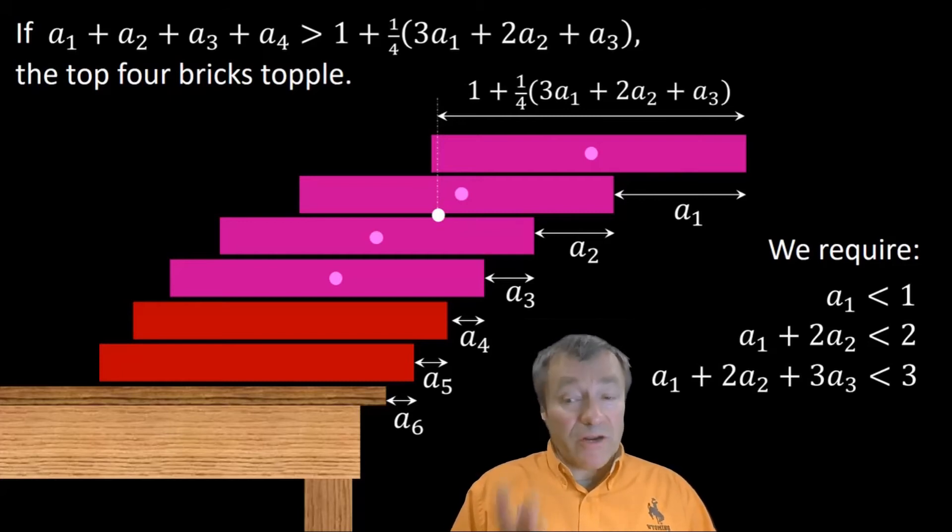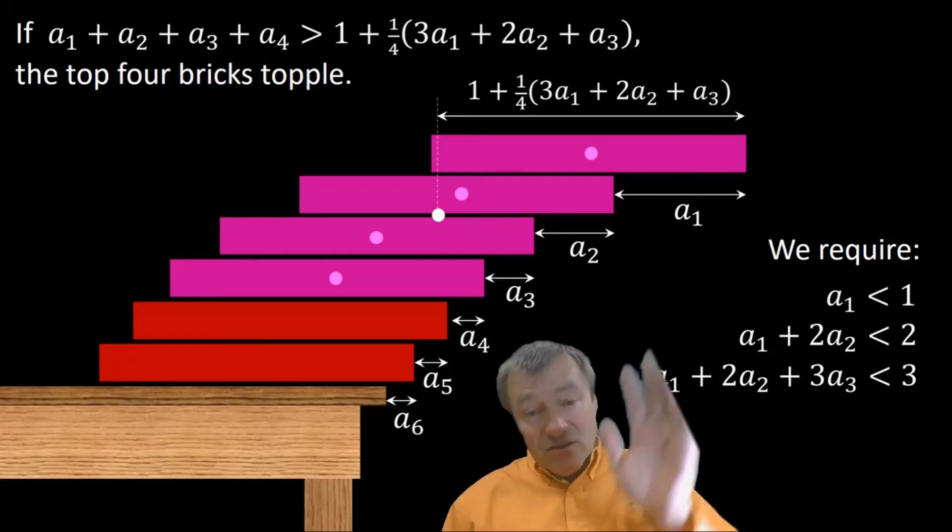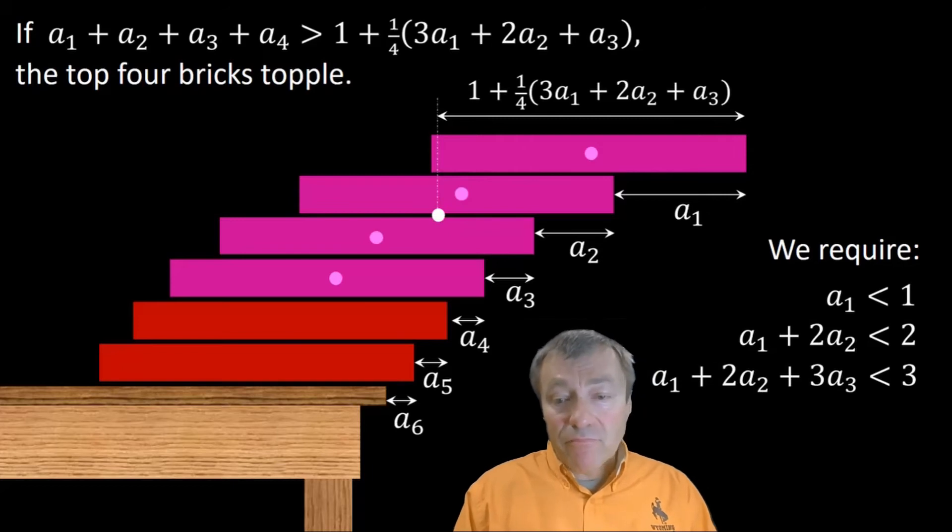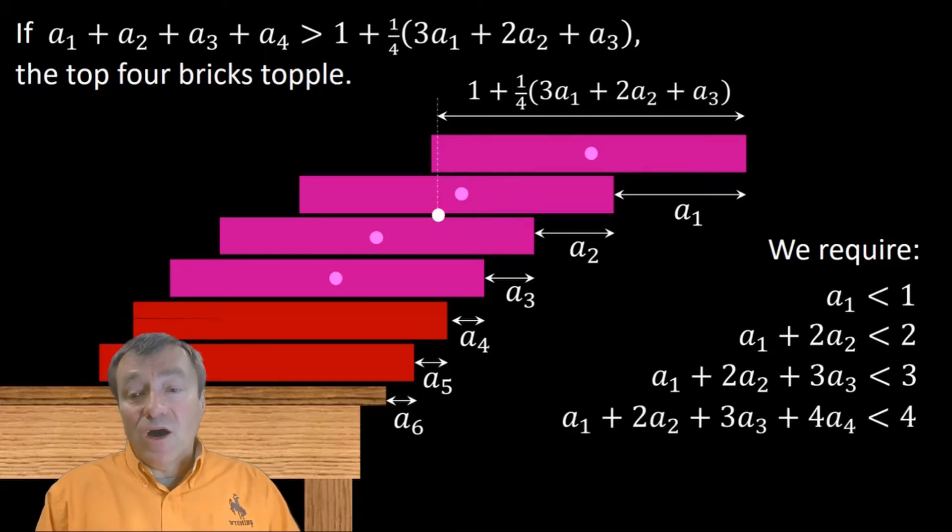Otherwise, the top four bricks together are just going to topple over. This gives a fourth condition, and I'll stick that also on the right-hand side. You simplify it, you get what you expect. It's the last inequality on the right-hand side.